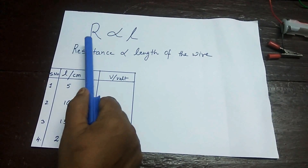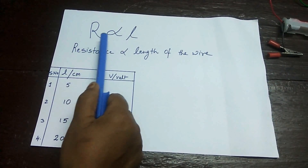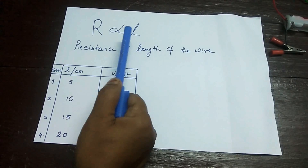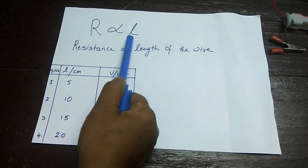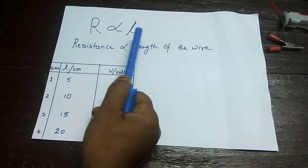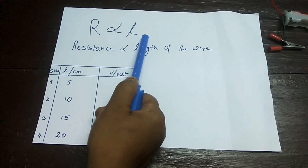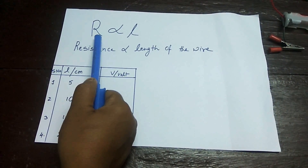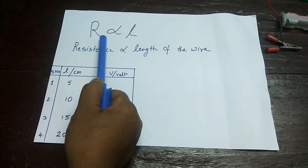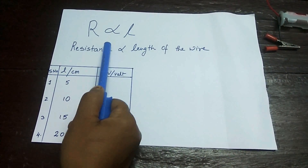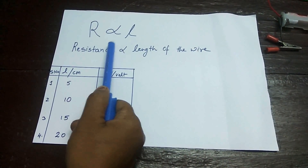I am going to explain the relation between resistance and the length of a conductor. As we know, R is proportional to L, where R is the resistance and L is the length of the conductor. When we increase the length of the conductor, R will also increase because they are directly proportional to each other. This relation we are going to prove through an experiment.